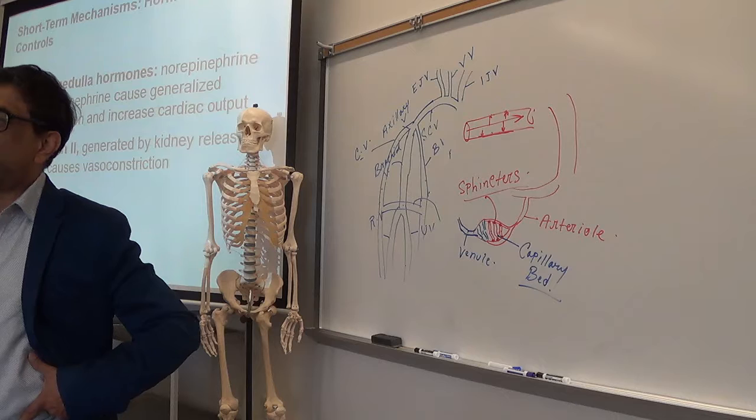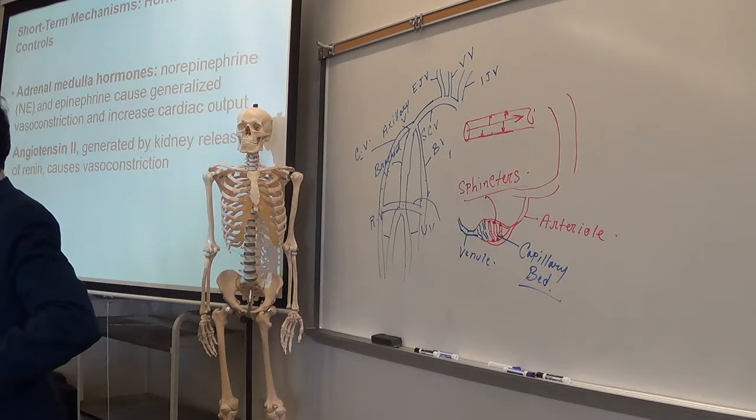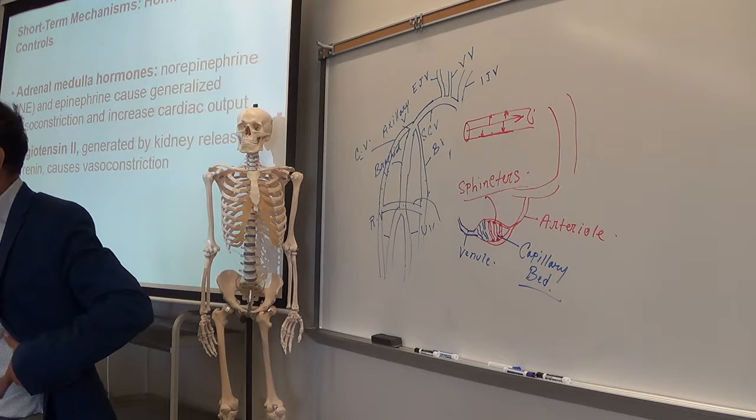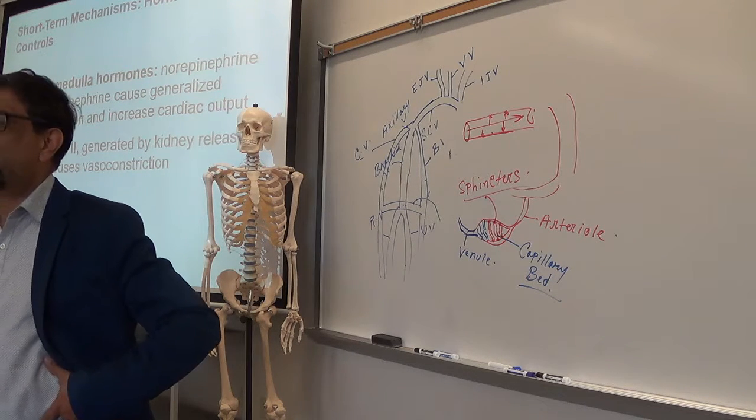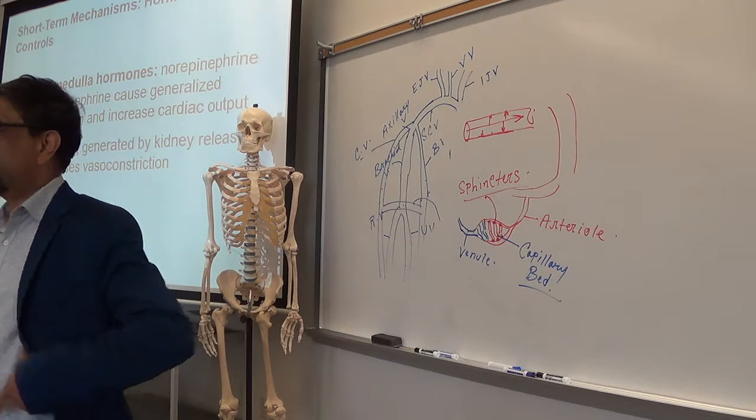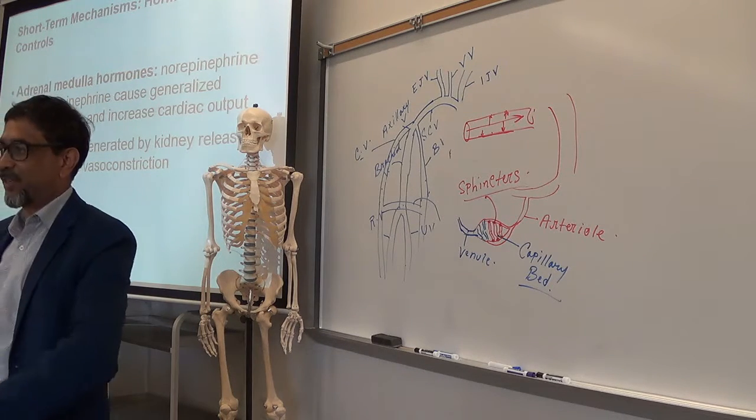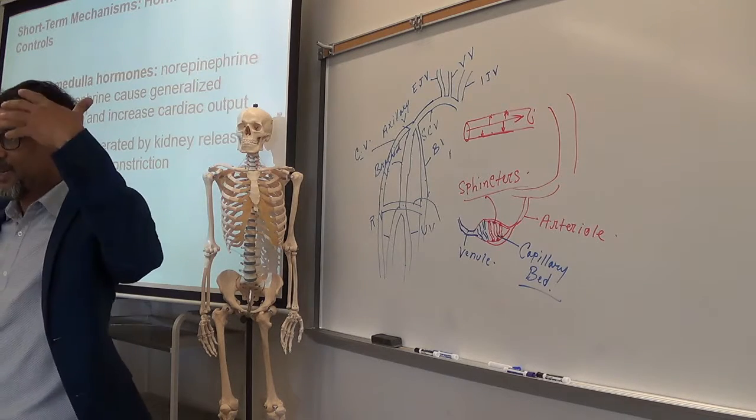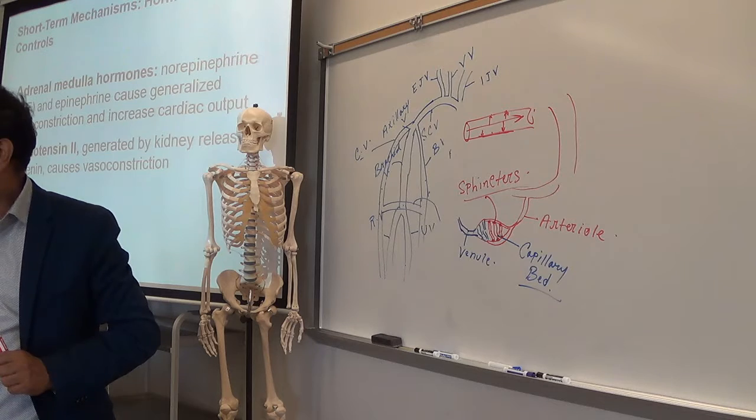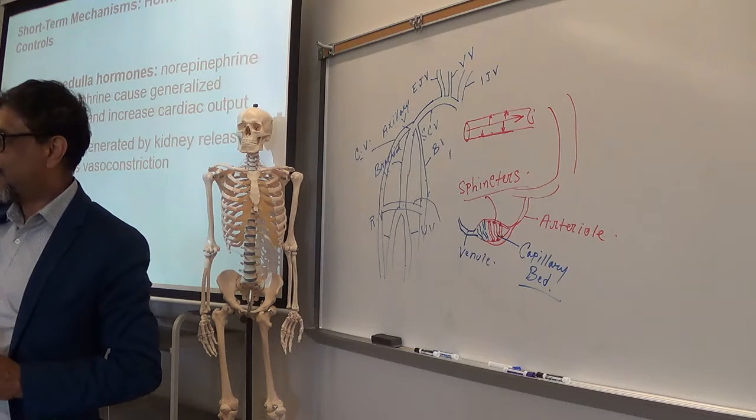That converts angiotensin 1 to what? Angiotensin 2. If you go back to my previous lecture, you'll find it. I wrote on the board. And angiotensin 2 is very powerful. It causes generalized vasoconstriction. That means whole body blood vessels will be constricted, so blood pressure will go up.